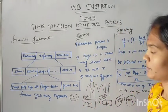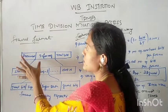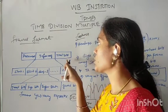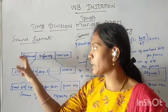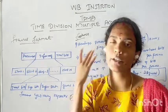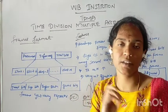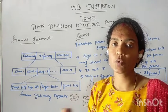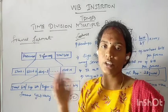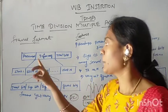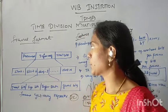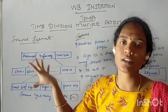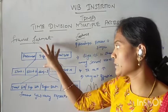Next, the TDMA frame format. This is the TDMA frame format. It consists of: preamble, information message, and trial bits. In the preamble, there are address and synchronization bits. The address is used to identify the subscriber. In the information message, this consists of the message — the information block.